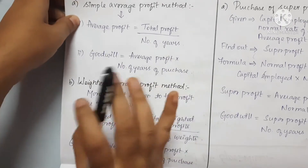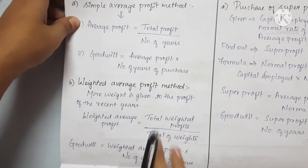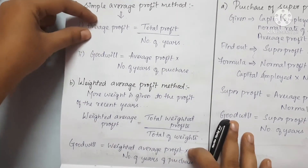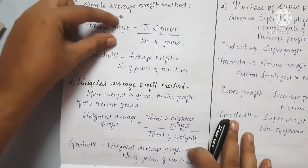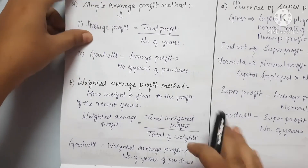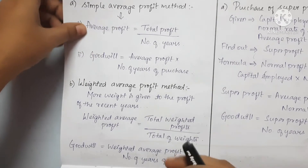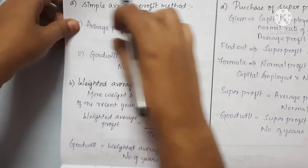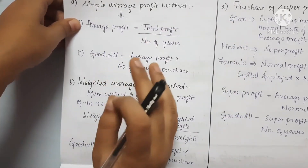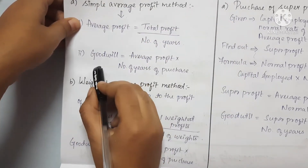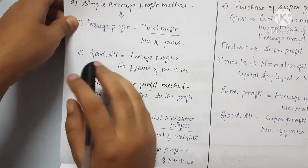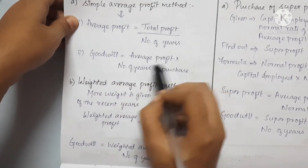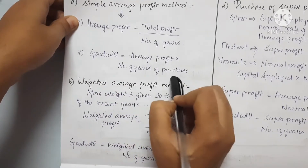In all sums, we need to calculate the goodwill. The goodwill formula is: Goodwill equals Average Profit multiplied by the number of years of purchase.